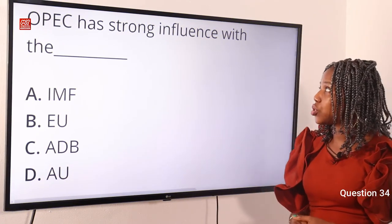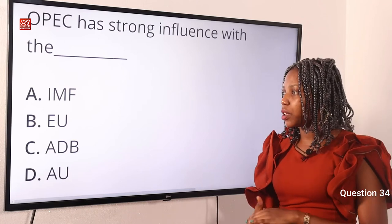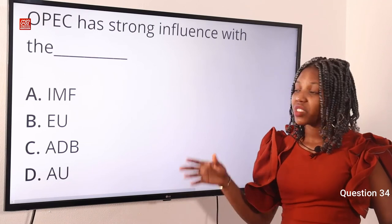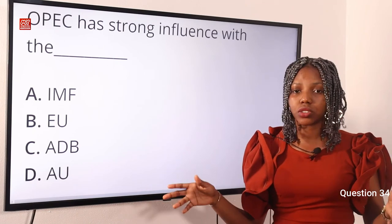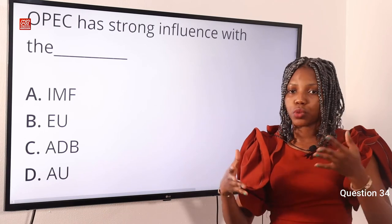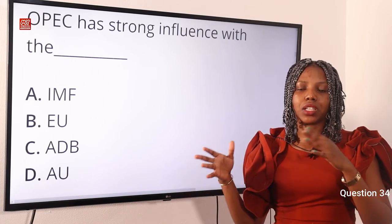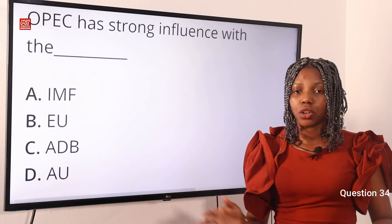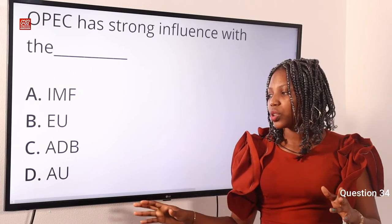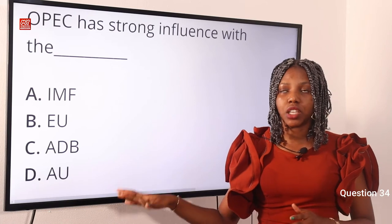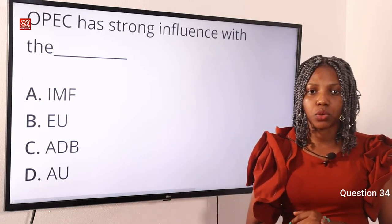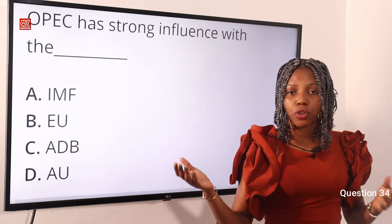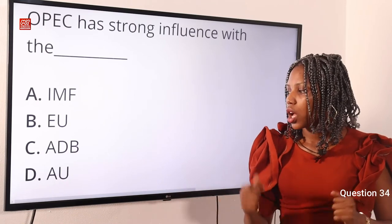Question 34. OPEC has strong influence with the dash. Option A, IMF — International Monetary Fund. Option B, EU — European Union. Option C, ADB — African Development Bank. Option D, AU — African Union. The answer is Option D, AU. OPEC and the African Union are organizations that have their members as African states. We have 55 members of the AU and 13 members of OPEC, so OPEC's policies could be influenced by the AU. Option D is the correct answer.